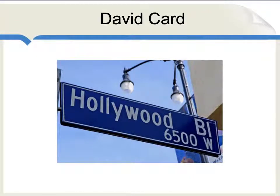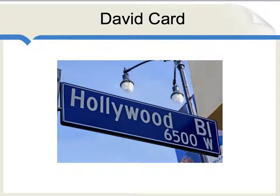David Card has studied the wage effects of immigration and arrives at results different from those of Borjas. What Card does is compare city by city. The cities which have a lot of immigrants coming to them do not in general have lower wage rates for native-born Americans. Cities with fewer immigrants do not seem to have higher wage rates for native-born Americans. What Card finds is that, on average, immigration doesn't really have much of an impact on wages at all for native-born Americans. In the aggregate, this is actually similar to the conclusion of Borjas — that the net long-run impact of immigration on wages for workers as a whole is zero.